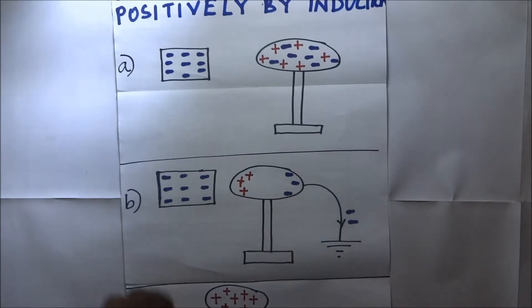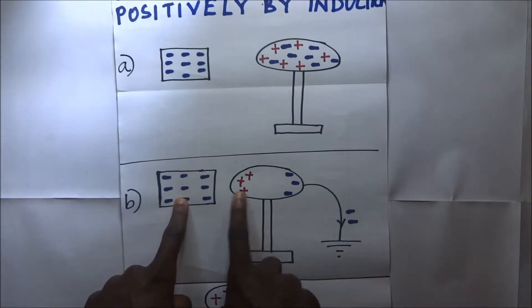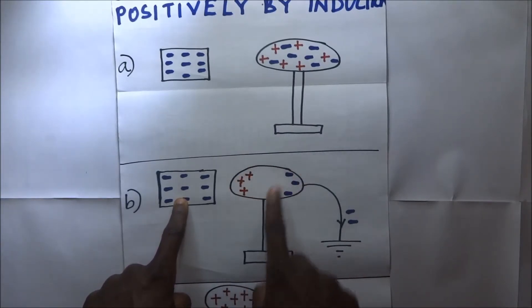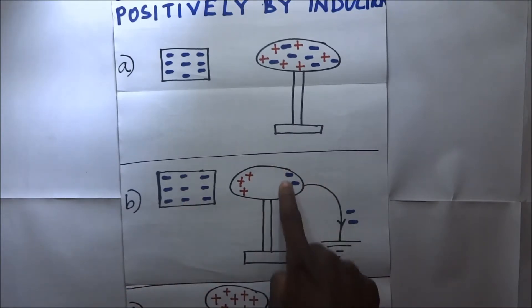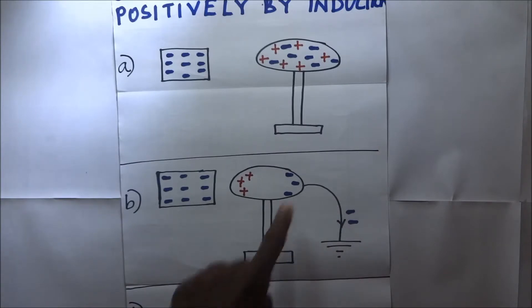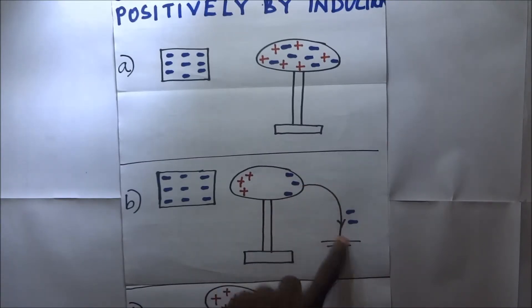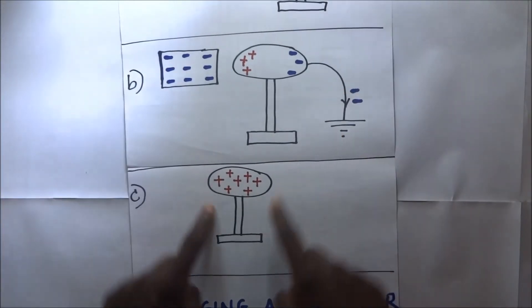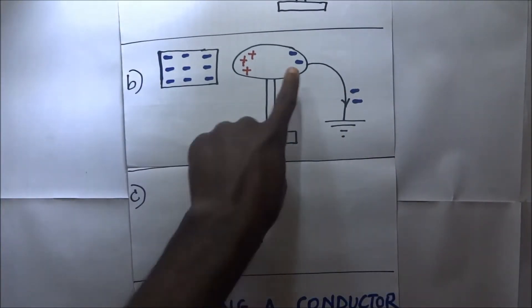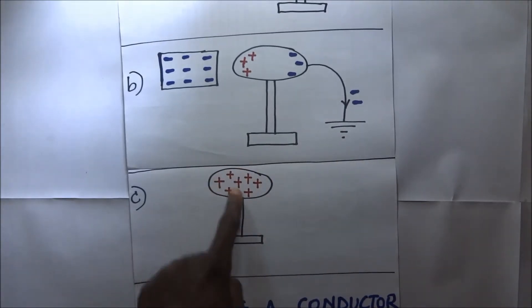When these negative charges are repelled, the positive charges remain attracted on the near side. While this charged body is still in the vicinity of the conductor, we ground — or earth — the conductor. When we earth it, the negative charges are further repelled to the ground. When we break the earthing and remove the charged body at the same time, most of the negative charges have gone to the ground, so the conductor remains predominantly positive.